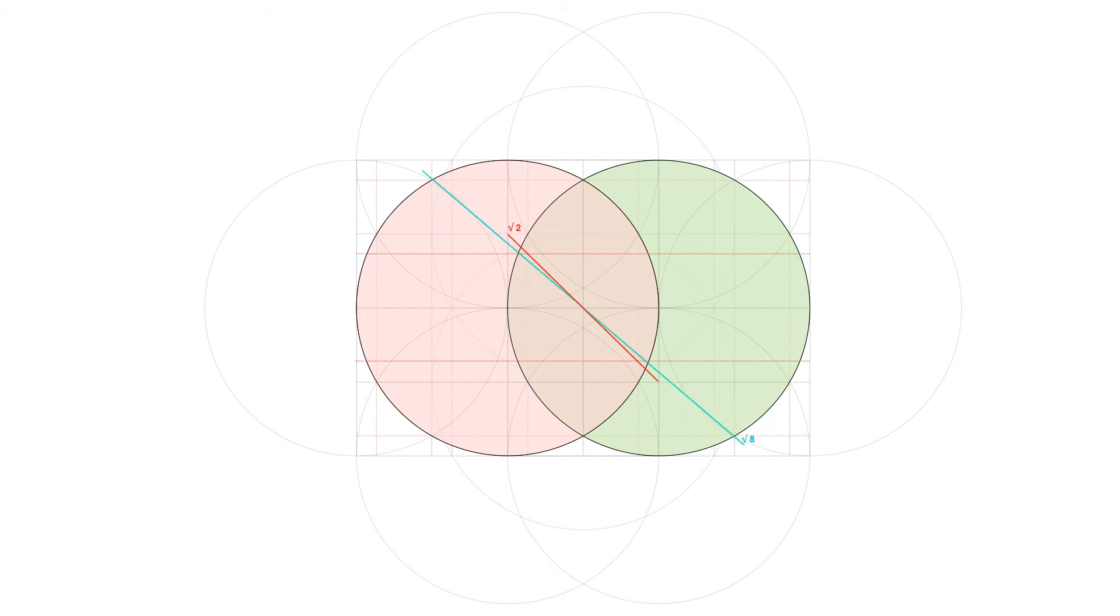Now, pretty interesting. This distance is root 3 plus 1. This is root 3 minus 1. And it gives the perfect square root of 8 here.